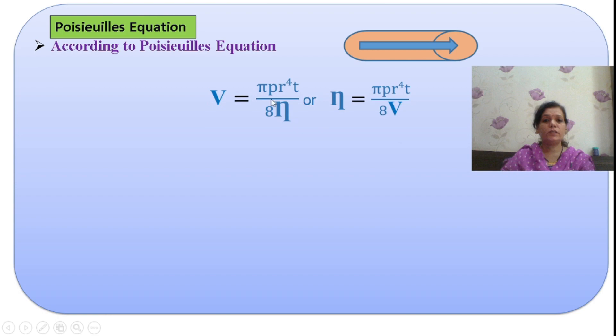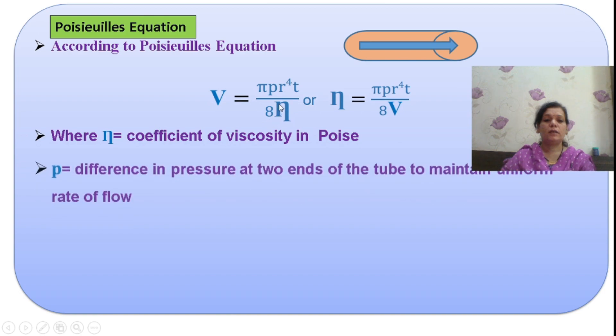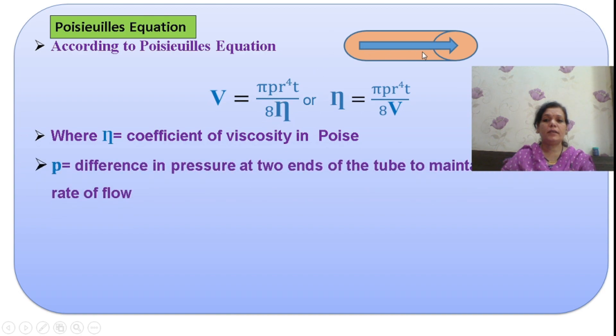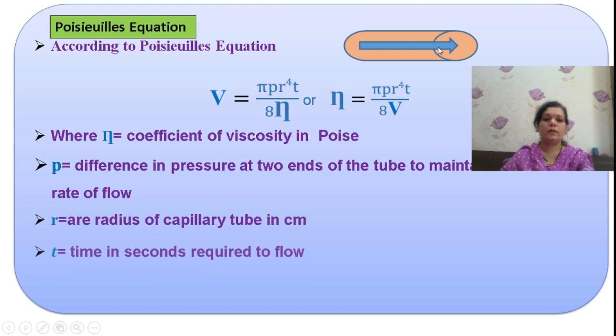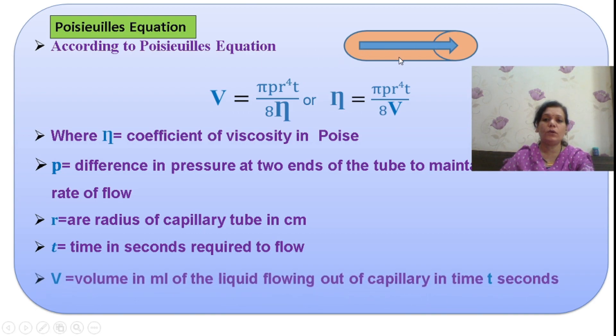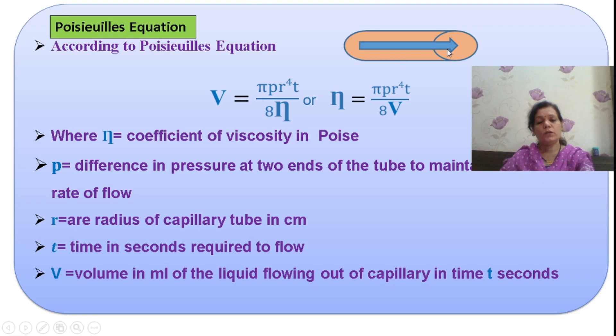They are related in this equation where η is the coefficient of viscosity, P is the pressure at the ends of the tube maintained uniform for rate of flow, r is the radius of the capillary tube, t is the time in seconds required to flow, and V is the volume flowing through the capillary at time t seconds.